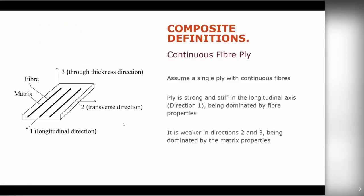Now we bring this into the context of a single ply. A single ply is a layer of continuous composite material consisting of fibre and matrix. The key directions of a ply are: the longitudinal direction acting across the fibre length, the transverse direction perpendicular to the fibre direction, and direction three, which is the through-thickness direction. These are basic nomenclatures that define a continuous ply, and it's important to remember them as we'll make reference to these later.